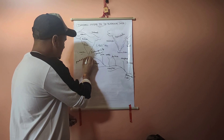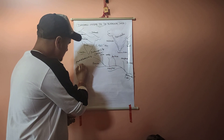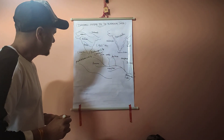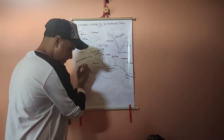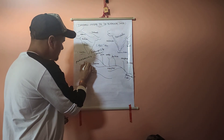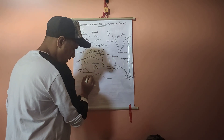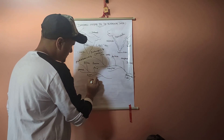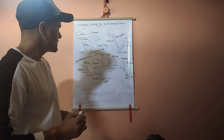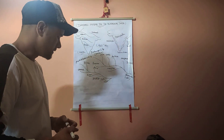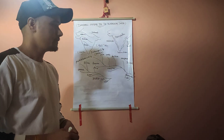The Krishna originates from Mahabaleshwar Hills in Satara district of Maharashtra. Its left bank tributaries include Bhima and Musi. The right bank tributaries are Venna, Koyna, Panchganga, Malaprabha, and Ghataprabha. A very important dam on the Krishna River is the Almatti Dam.